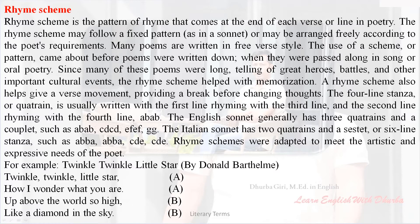The English sonnet generally has three quatrains and a couplet, such as A-B-A-B, C-D-C-D, E-F-E-F, G-G.